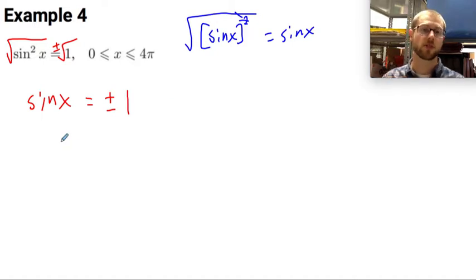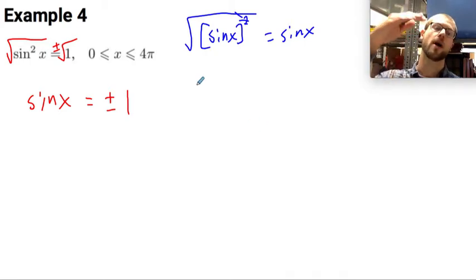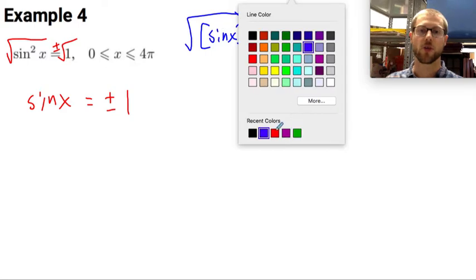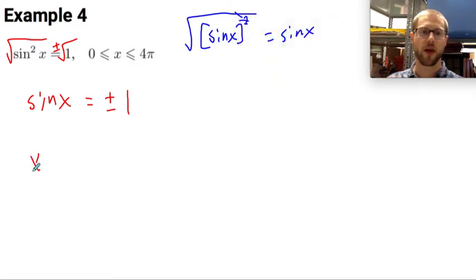Alright, so now I have this somewhat simple sine equation. I want to know when sine of x equals positive or negative 1. So I can think again about my unit circle. I'm looking for where the y value is either positive 1 or negative 1. And that's going to happen in two places. X could equal π/2 or 3π/2.